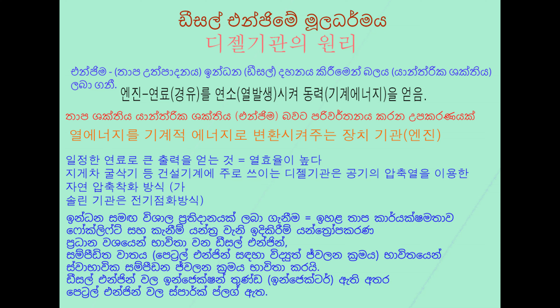엔진은 일정한 연료로 더 큰 출력을 달성하며 높은 열효율을 가집니다. 지게차, 굴삭기 등 건설기계에 주로 사용되는 디젤 엔진은 압축공기를 이용한 자연압축착화 방식을 사용합니다. 가솔린 엔진의 경우 전기점화 방식을 사용합니다. 디젤 엔진에는 분사 노즐(인젝터)이 있고 가솔린 엔진에는 점화 플러그가 있습니다.